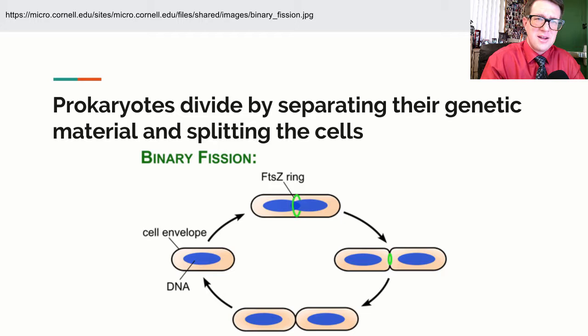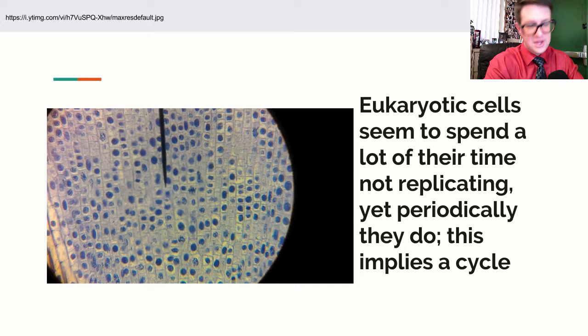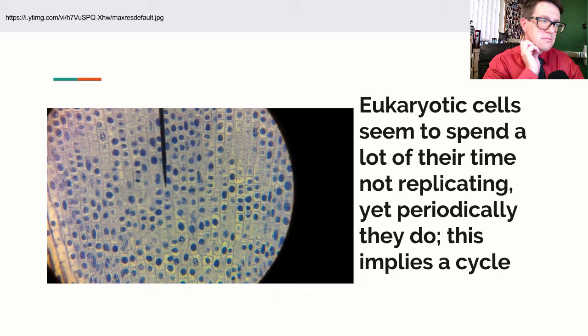If I look at a eukaryotic cell, especially one that's been stained so I can see the nucleus, that's not the pattern I see. This here turns out to be a slide of an allium root tip — allium is an onion. If you take a root of an onion, which is constantly growing, and slice it really thin and stain it with a stain for chromatin, what you get is this pattern. You notice there are a whole bunch of black circles, but every once in a while we see threads — chromosomes, chromatin.